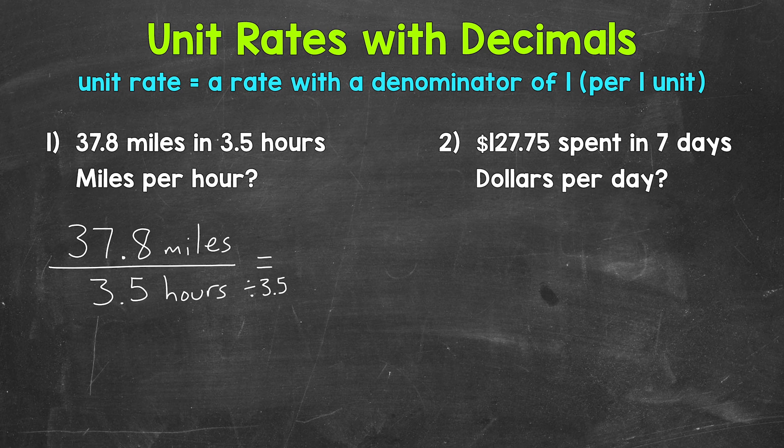Now just like equivalent fractions, whatever we do to the bottom or denominator, we must do to the top, the numerator, or vice versa, in order to keep everything equivalent and proportional. So let's divide the top number by 3.5 as well. And that's going to give us our unit rate.